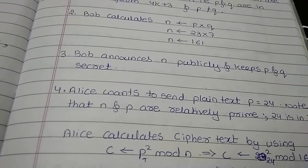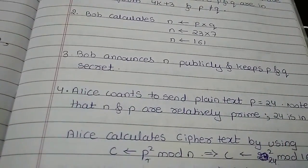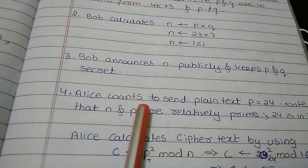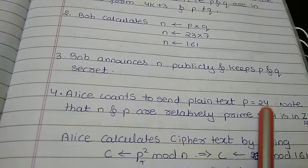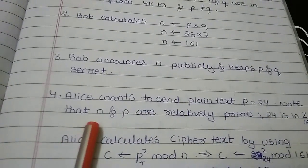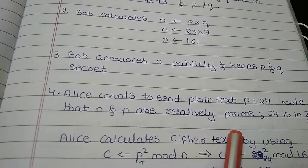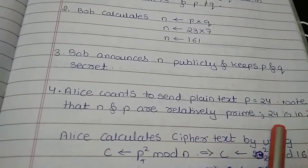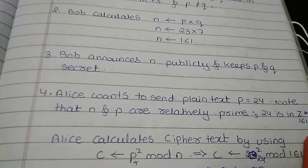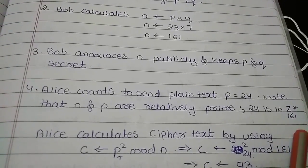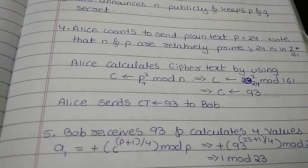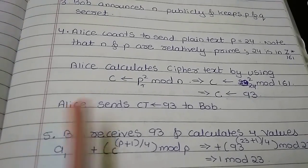Now imagine Alice is the person who wants to send some data to Bob. The data is nothing but 24. Remember here that the value of N and P are relatively prime. And the value 24 which is our plain text is in the group of Z integer 161. Always remember whatever plain text is there it should be less than the value of N.